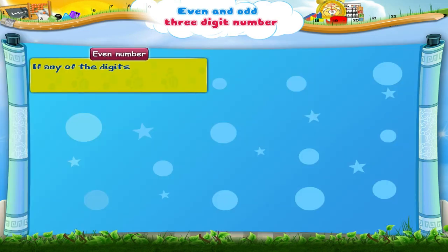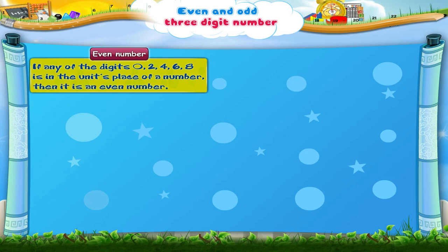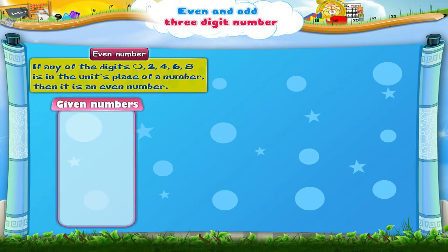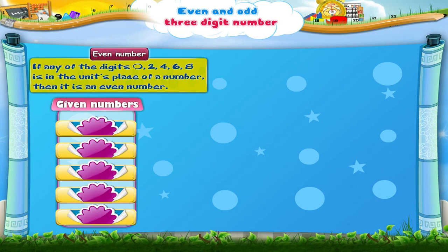If any of the digits 0, 2, 4, 6, 8 is in the unit's place of a number, then it is an even number. Look at the unit's place of these numbers. Each number has either 0, 2, 4, 6, or 8 in the unit's place. So, these are even numbers.